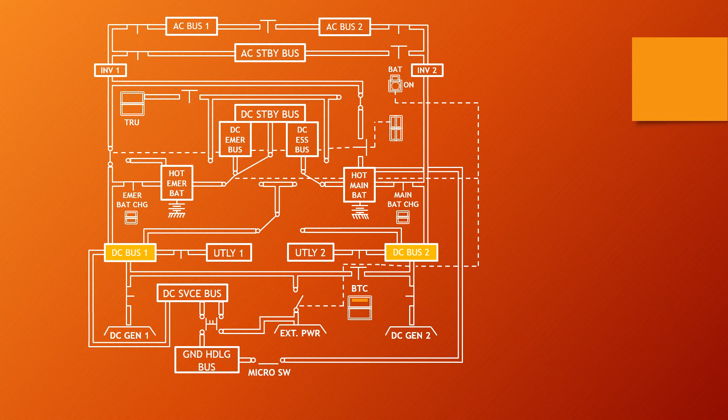DC Bus 1 is normally powered by DC Generator 1, and DC Bus 1 normally supplies the Hot Emergency Bat Bus, DC Emergency Bus, DC Standby Bus, Utility Bus 1, Inverter 1, and DC Service Bus.